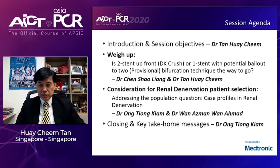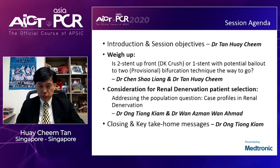In this session's agenda, we will start with a debate format between Dr. Shao Liang Chen from Nanjing People's First Hospital and myself on the topic of whether two stents upfront with DK CRUSH or one stent with potential bailout — a provisional strategy — is the way to go for bifurcation treatment. This will be followed by a second talk by Dr. Ong Tiong Kiam and Dr. Wan Asmat from Malaysia on considerations for renal denervation patient selection.